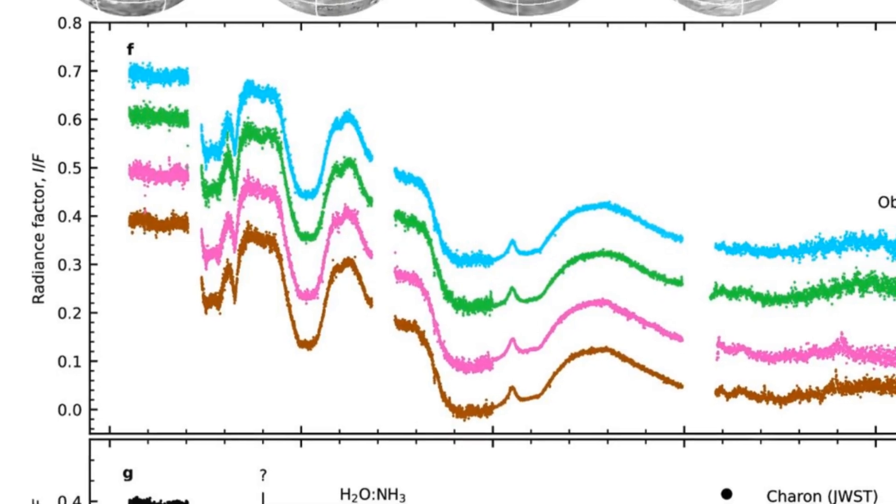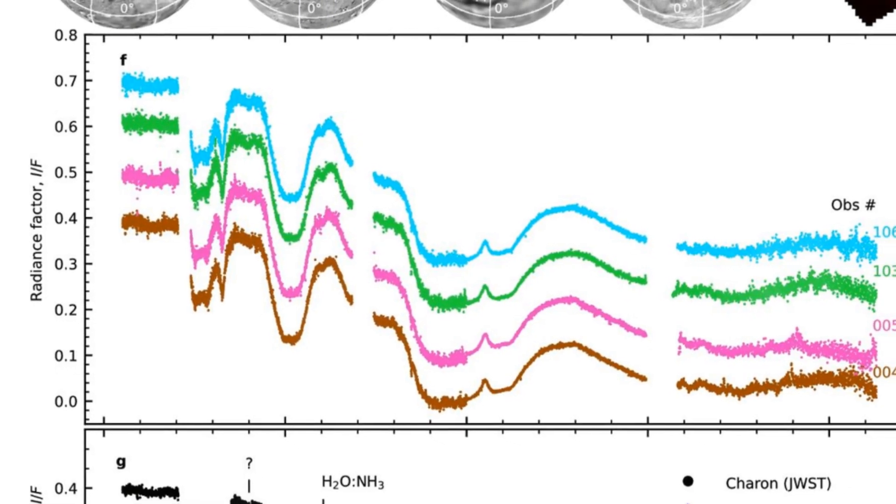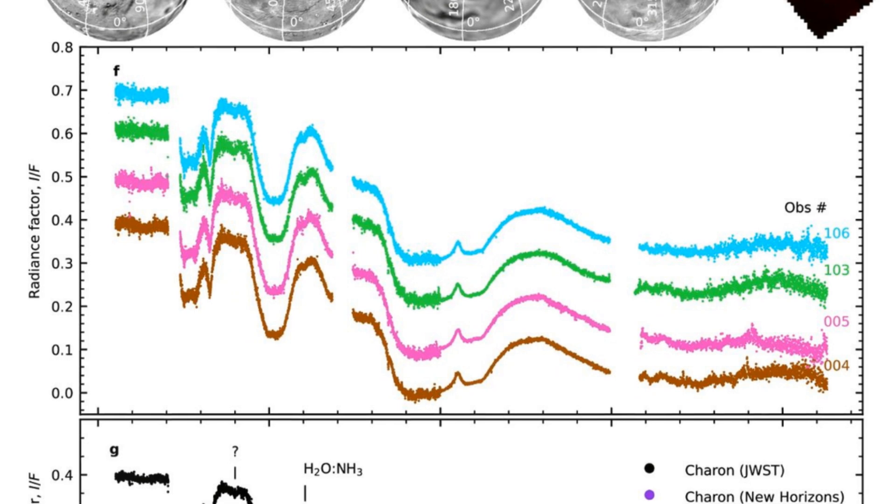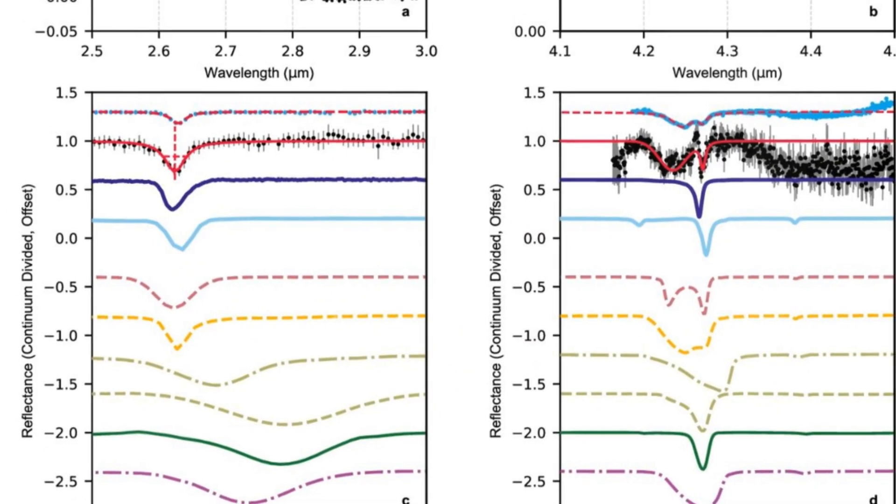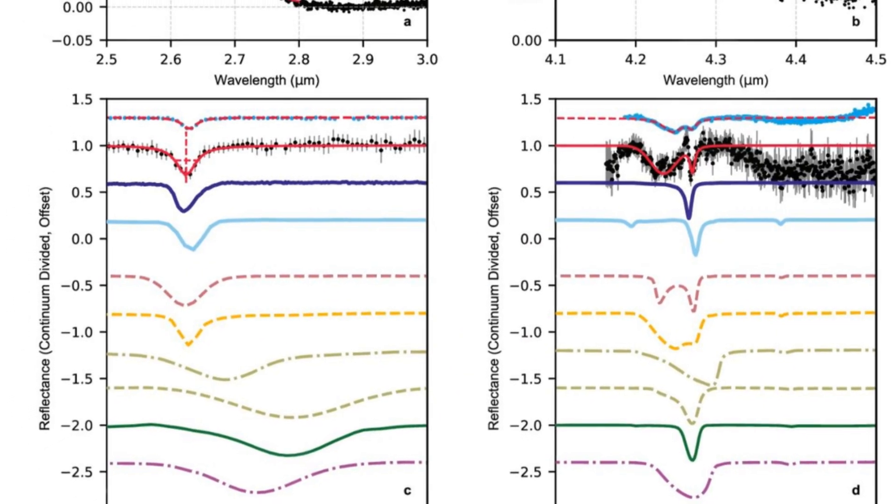The presence of carbon dioxide aligns with what we expect from the protoplanetary disk where the Pluto system originated, but here's the kicker: the unexpected discovery of hydrogen peroxide.